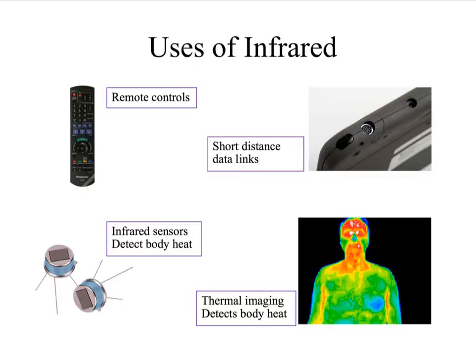We'll start by looking at infrared, and here we've got some pictures that show uses of infrared. Remote controls for TVs and DVD players use an infrared signal. Less commonly used now, but short-distance data links — a laptop has a little infrared sensor and transmitter there, and you could put that next to a mobile phone to send signals over short distances. Down here we've got infrared sensors and thermal imaging, which work by detecting body heat.